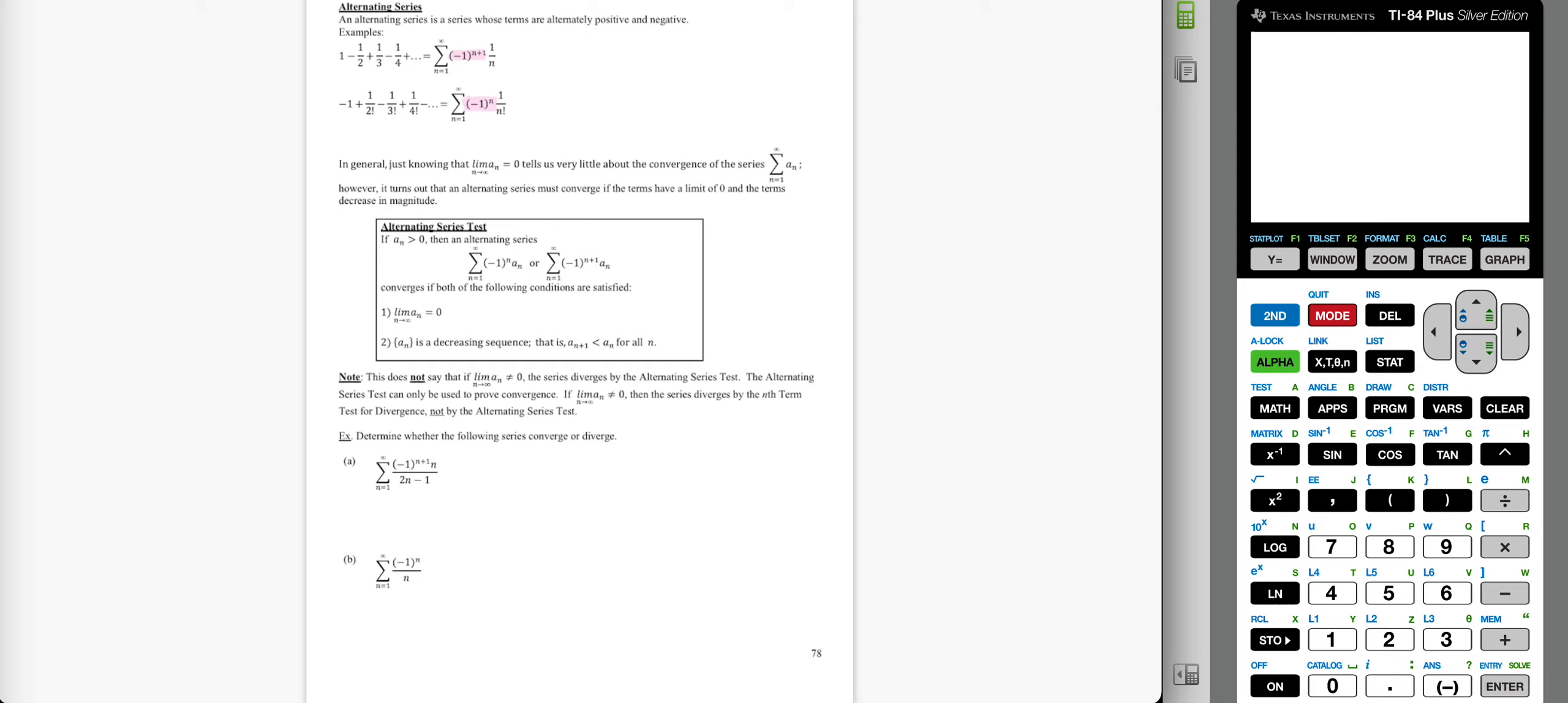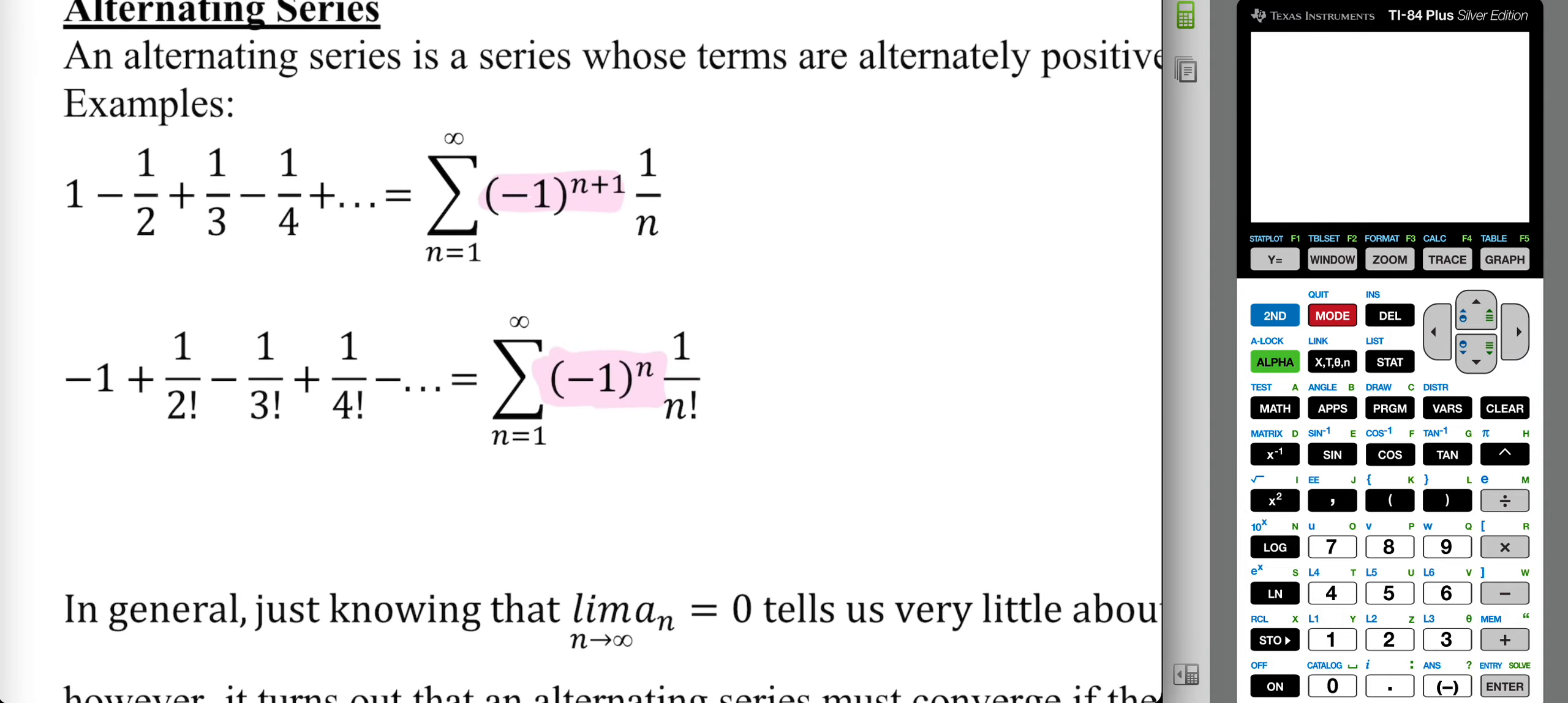We're looking at page 78, alternating series. Alternating series involve transitions from negative to positive terms. I highlighted the values or the components that lead to those transitions, so we have negative 1 raised to the n plus 1 versus negative 1 raised to the nth.